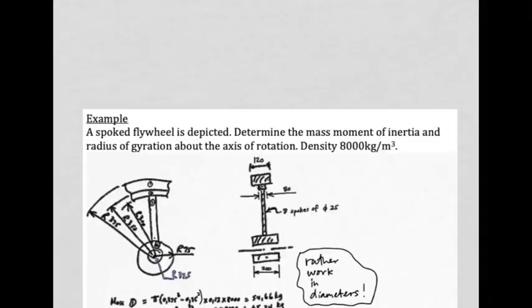Our final example uses the spoked flywheel formula. We determine the mass moment of inertia and radius of gyration about the axis of rotation for a spoked flywheel of given density. The flywheel has an outer rim, a slightly smaller inner rim, eight spokes, and a center boss — giving four distinct pieces. Stop the video, make a good attempt, then restart to check. A note: the solution works in radii, but working in diameters is equally valid.